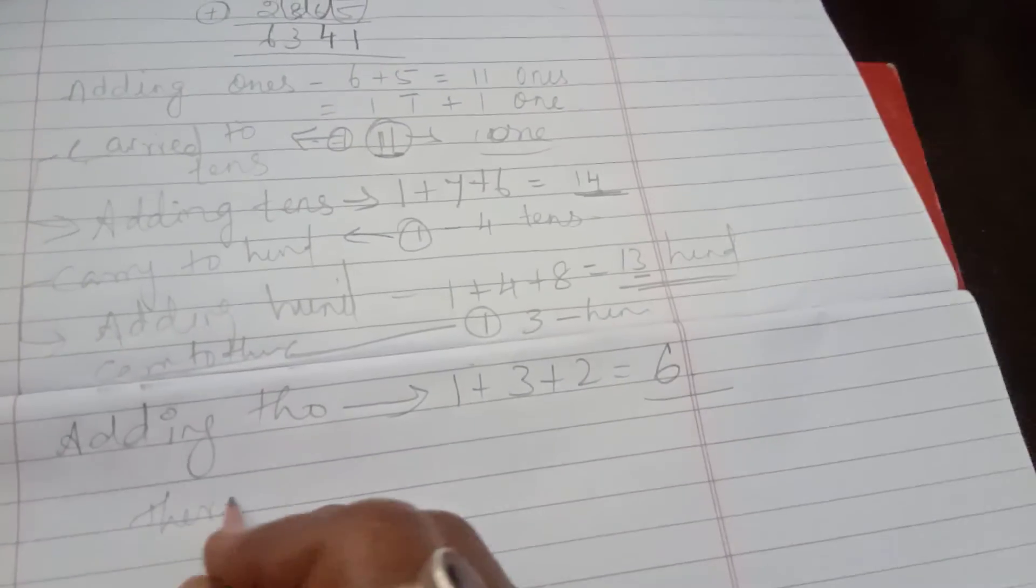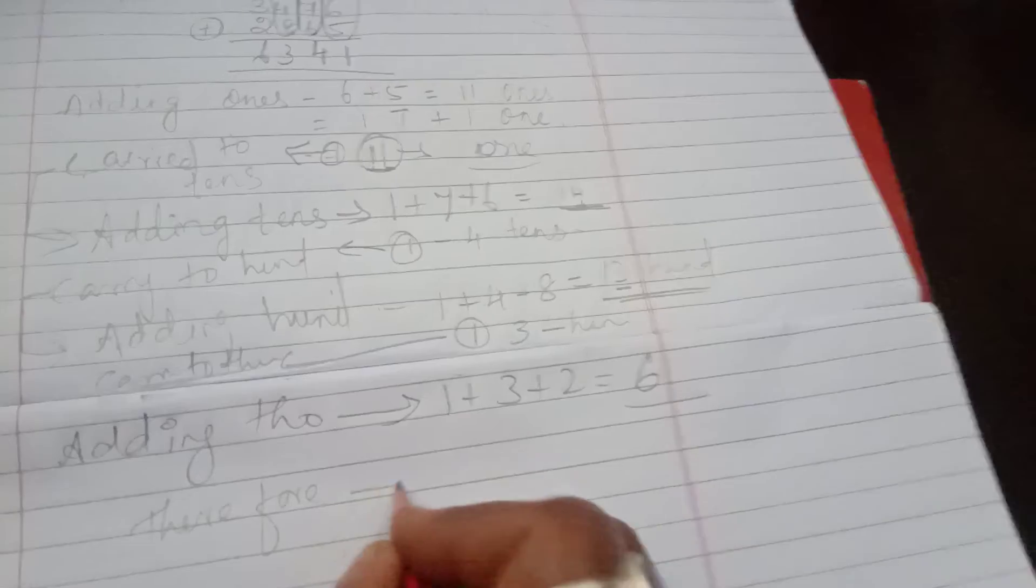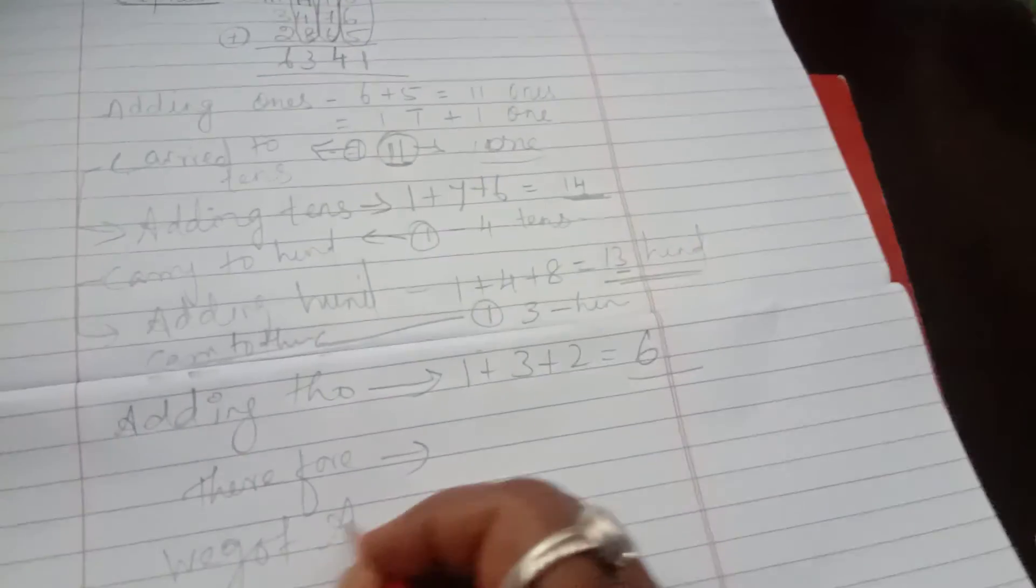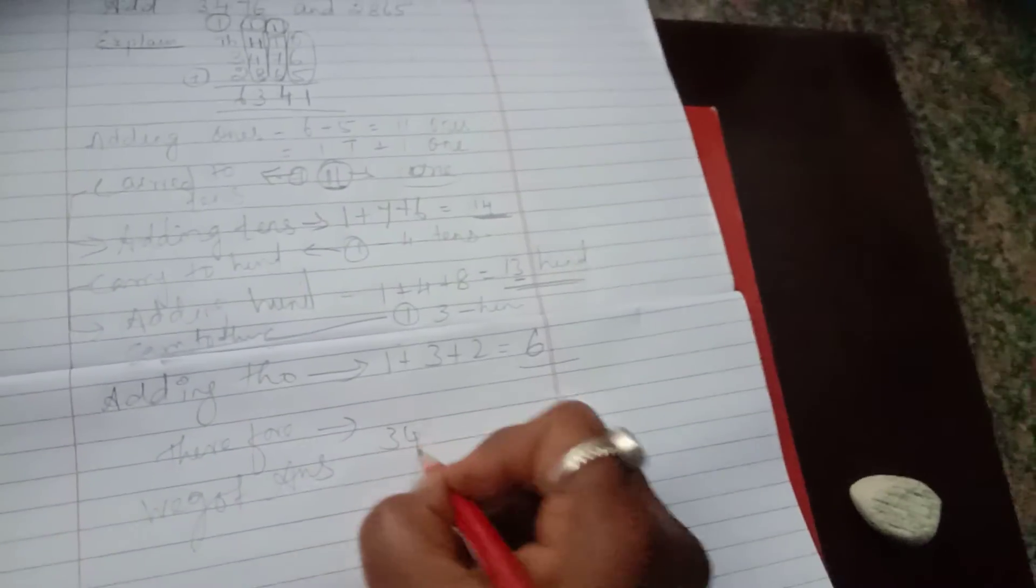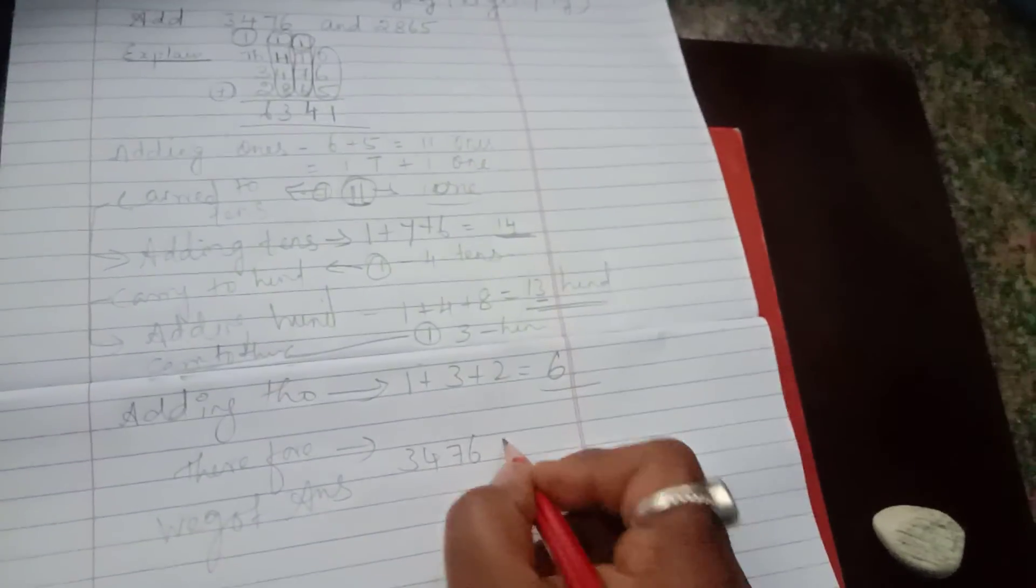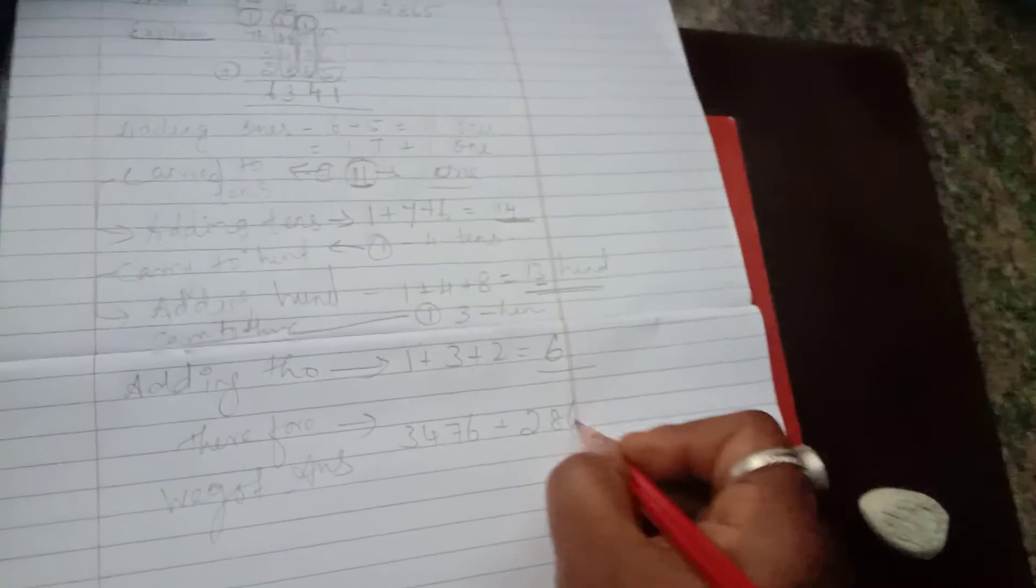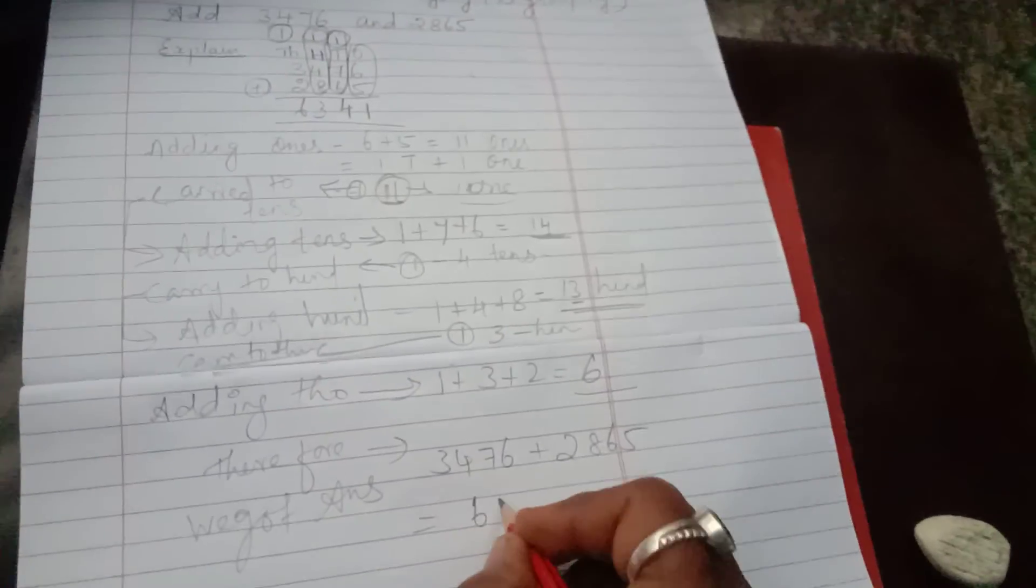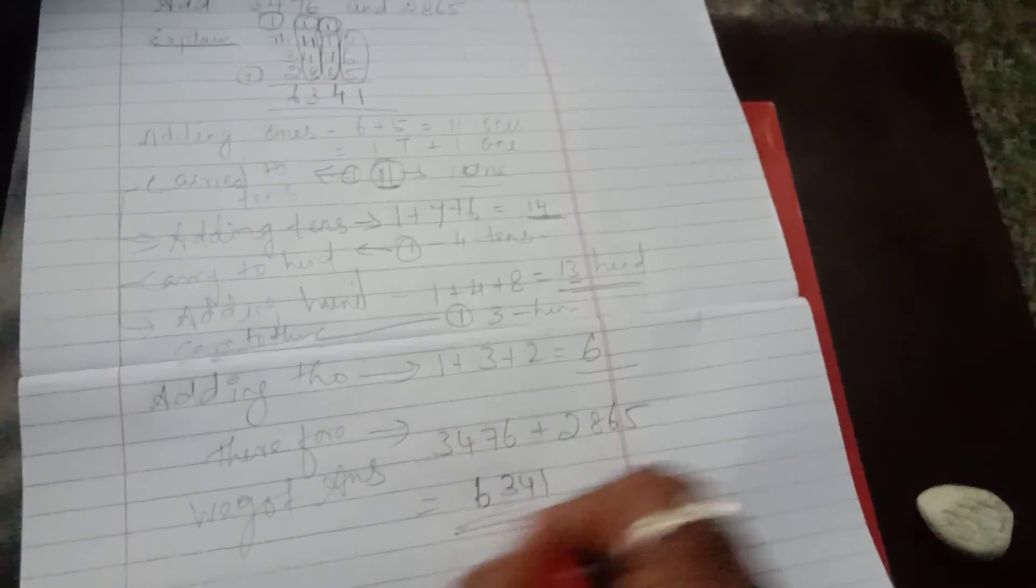Therefore, we got answer. Adding of 3476 plus 2865 is 6341. This is the answer.